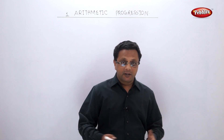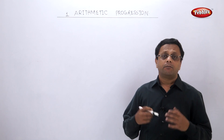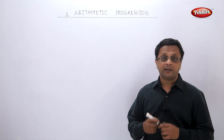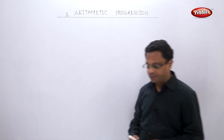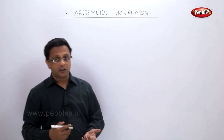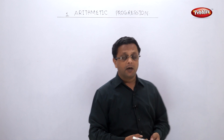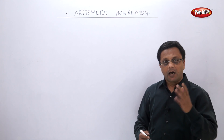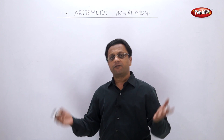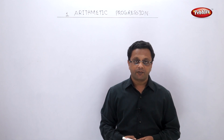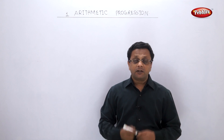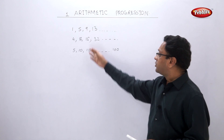Hello friends! In this series — Mathematics Part 1 Algebra of Maharashtra State SSC Board — we are going to start the first chapter: Arithmetic Progression. First, we have to learn about sequences. What is a sequence? Something in a series with a particular order is called a sequence. In short, a sequence can be defined as a collection of numbers in a definite order with some definite rule.